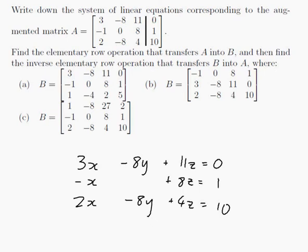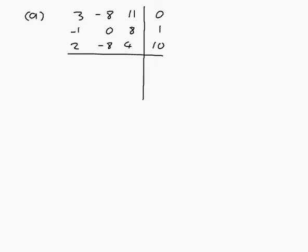Now let's do part A. We want to find an elementary operation that transfers my matrix A into my matrix B. So we'll need a new page to do that. My matrix A is 3, minus 8, 11, 0, minus 1, 0, 8, 1, 2, minus 8, 4, 10. And traditionally when you're doing row operations on an augmented matrix, you write it like this and the matrix that it becomes after the first row operation would go underneath here.